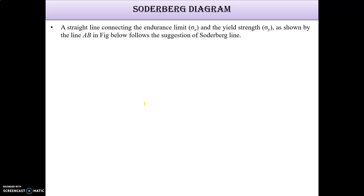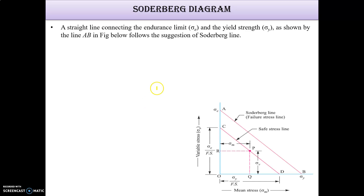The Soderberg diagram has been developed based on the SN curve. In this diagram, the x-axis represents mean stress (Sigma M) and the y-axis represents variable stress (Sigma V). Sigma E is the endurance limit and Sigma Y is the yield strength. Whenever the Soderberg diagram is considered, yield strength is used.